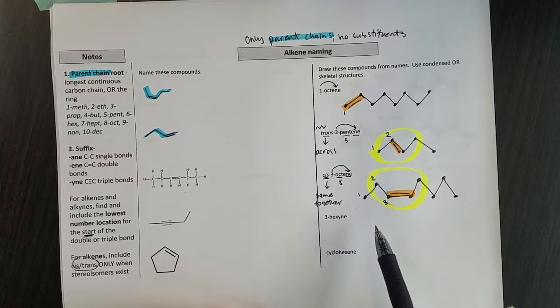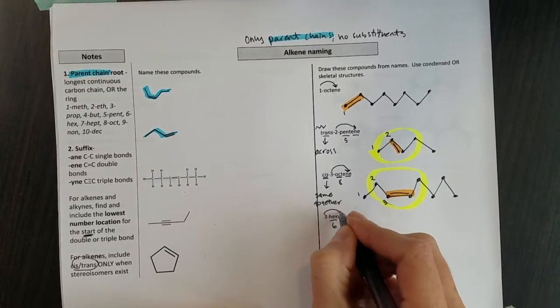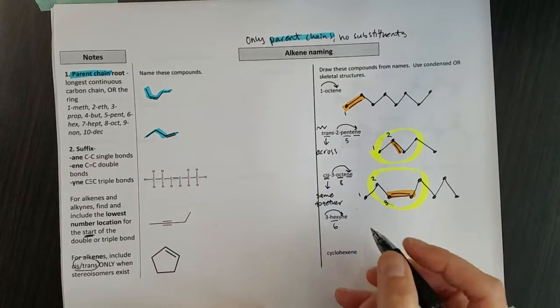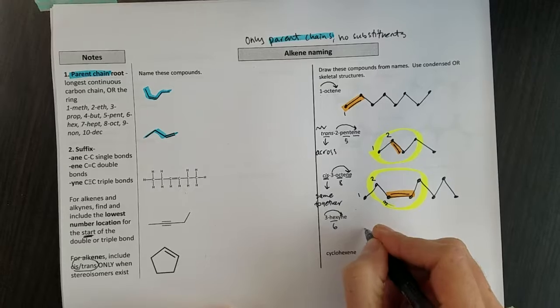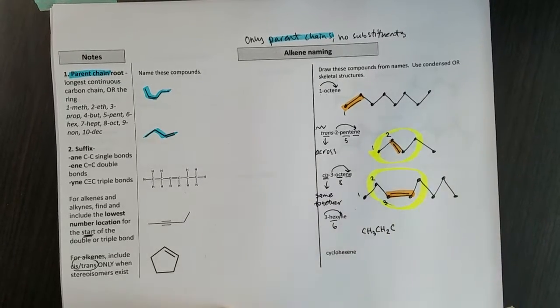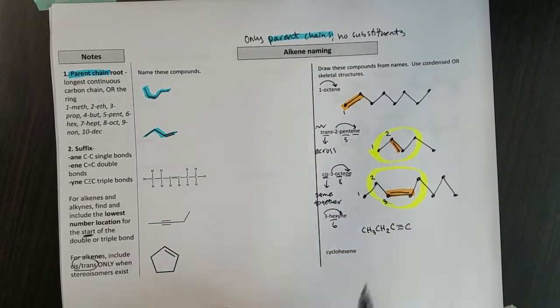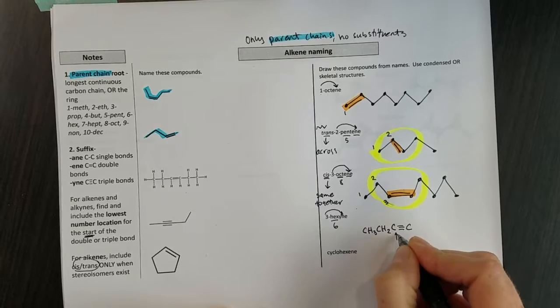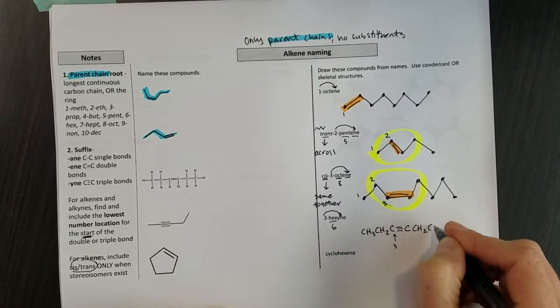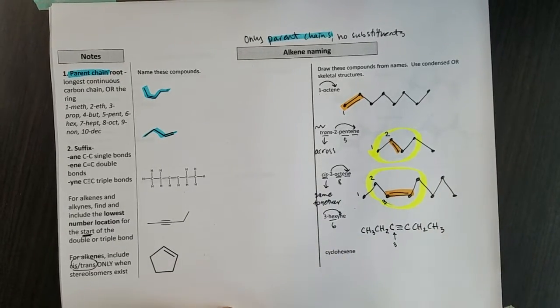Last one, or I guess I'll sketch two more here with you. 3-hexyne. So hex I see six. The three tells me I've got an -yne, which is now one of those triple bonds. I'm going to go with condensed for this because I think it's easier. So CH3, CH2, and then I have my carbon that's in a triple bond. It doesn't have any other hydrogen. So that's carbon three right here, four, and then a CH2 and a CH3. We won't be doing much at all with the ynes.